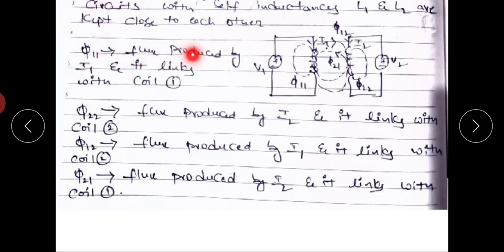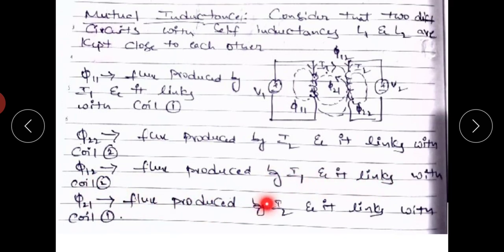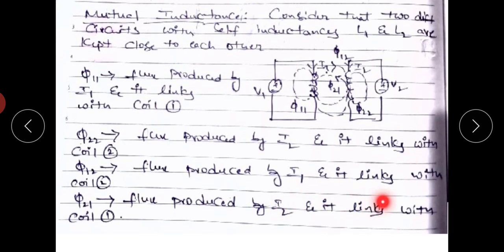φ11 is the flux produced by I1 and it links with coil 1. φ22 is the flux produced by I2 and it links with coil 2. φ12 is the flux produced by I1 — the first coil current — and it links with coil 2. Similarly, φ21 is the flux produced by I2 and it links with coil 1.